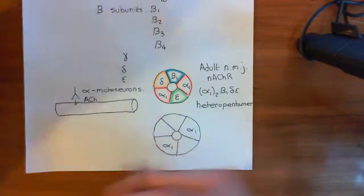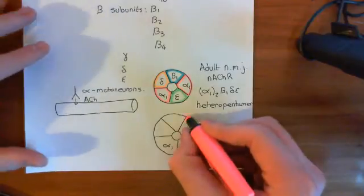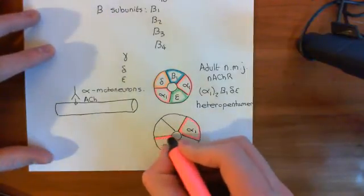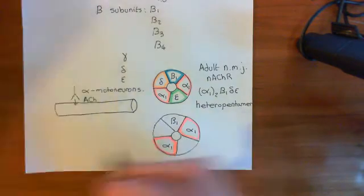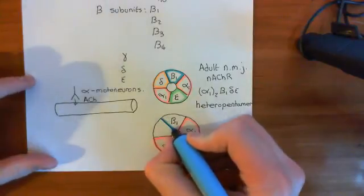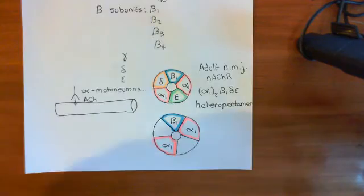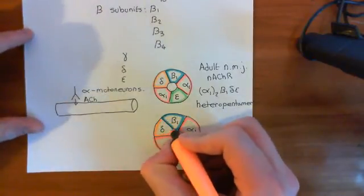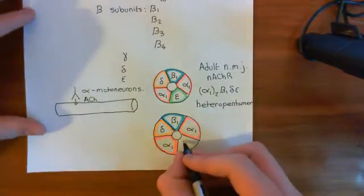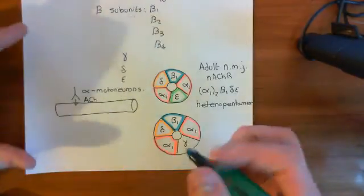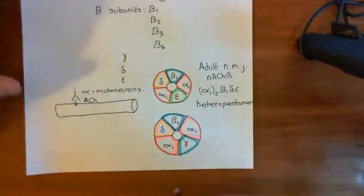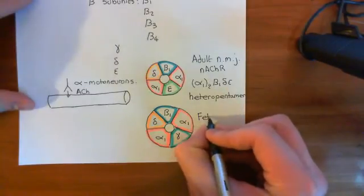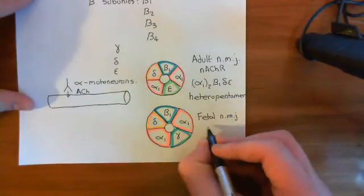You have alpha-1 subunits here, which I'll circle in red again. You're only going to change one protein subunit. The beta-1 subunit remains the same, so let's circle that in blue. The delta subunit also remains the same, in orange. So what do you replace the epsilon subunit with? Basically, you replace it with the gamma subunit. So this is how the fetal neuromuscular junction nicotinic acetylcholine receptor differs from the adult form.